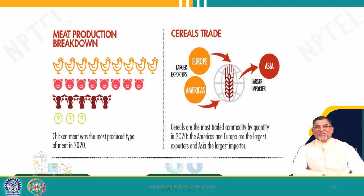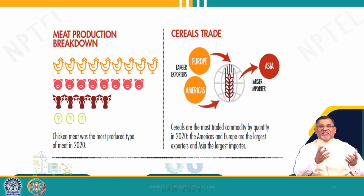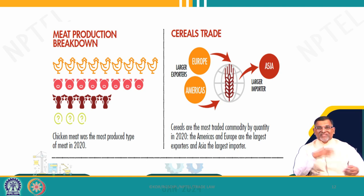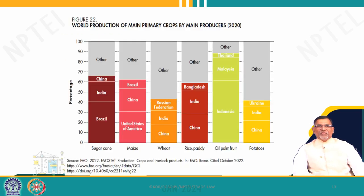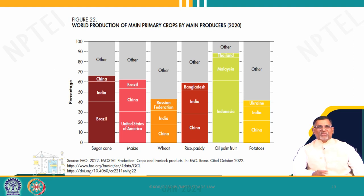When we discuss the agriculture agreement, we will definitely discuss these countries' interests in WTO — their arguments and what the agriculture agreement should look like. It is clear that America and Europe together are the largest exporters of agriculture in the world, and the recipient — the importer — is Asia. Looking at the primary production of crops by main producers, the largest producer of sugar is Brazil at around 40 percent, then India produces another 20 percent, China around 5 percent, and all others about 35 percent.